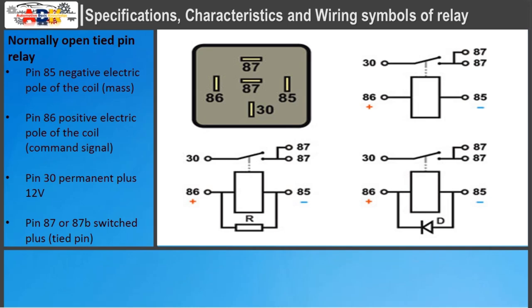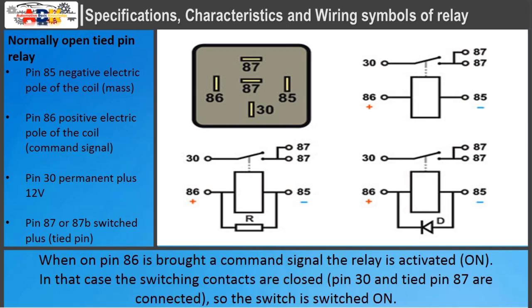Normally open tied pin relay: when a command signal is brought on pin 86, the relay is activated. The switching contacts are closed, pin 30 and tied pin 87 are connected, so the switch is switched on.